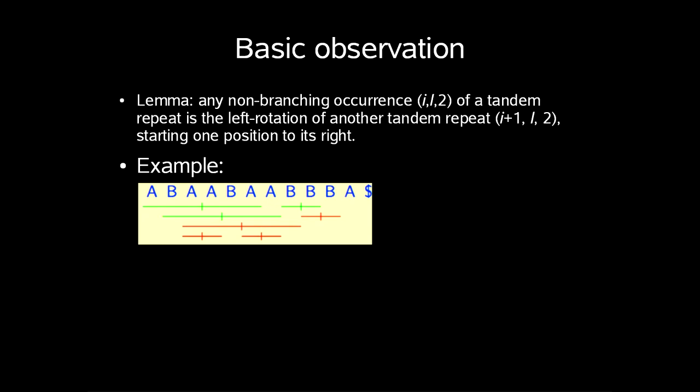A lemma says that any non-branching occurrence (i,l,2) of a tandem repeat is the left rotation of another tandem repeat (i+1,l,2) starting one position to its right.